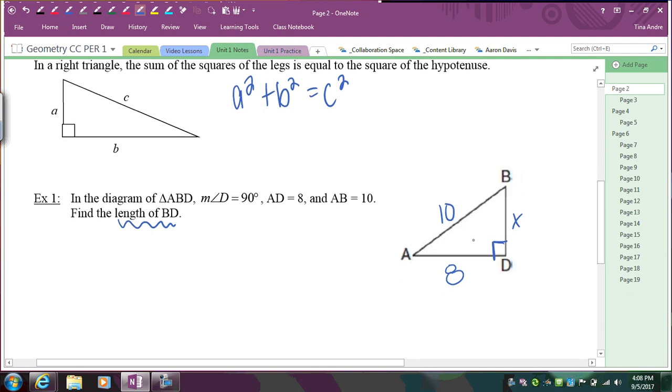So then from there, I know that I can use Pythagorean Theorem because one, I have a right triangle, and two, I'm trying to find the missing side of a right triangle given two other sides. So I'm going to use Pythagorean Theorem. So A squared plus B squared equals C squared. And remember that the hypotenuse is the longest side that's across from the right angle. So the 10 is going to go in for C, and A and B are the two legs. It doesn't matter which one goes where. So you can put 8 first or X first. It doesn't matter.